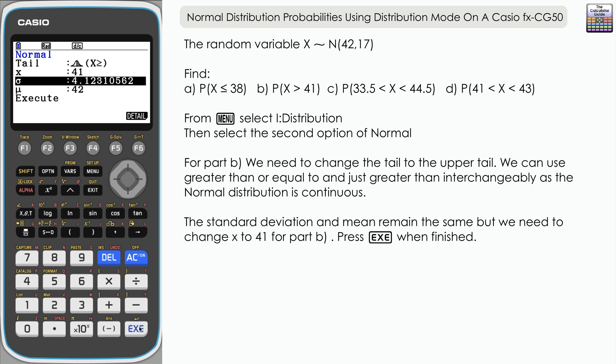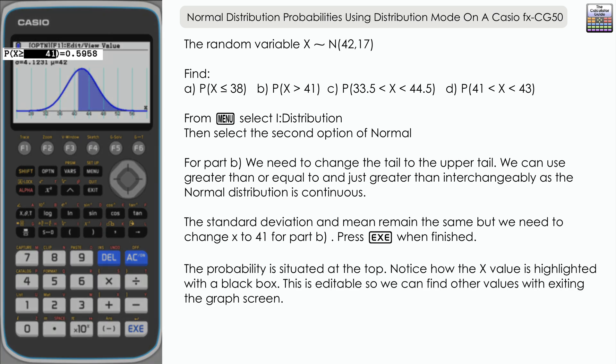Press execute and execute once more, and we've got the graph drawn again. The value of the probability is here at the top: 0.5958.